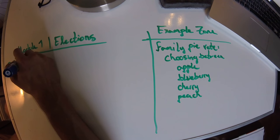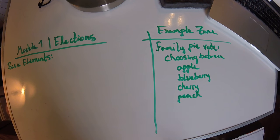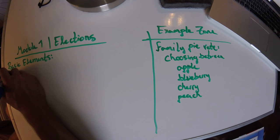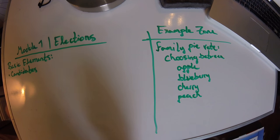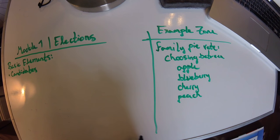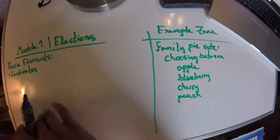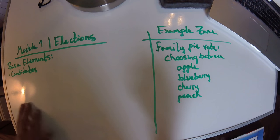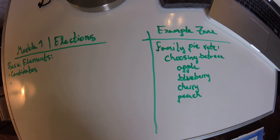Going over to the basic elements of an election — the first element is the set of candidates. These are the people or things that you can choose between. Whether it's decisions, people, or pies, one of these candidates is going to win the election. These are the things that you're choosing between. I assume you're somewhat familiar with this, so we'll move quickly through these.